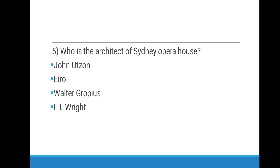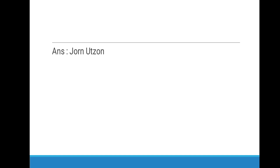Next question: Who is the architect of Sydney Opera House? Options are Jorn Utzon, Aero, Walter Gropius, or Eiffel Wright. The answer is Jorn Utzon.